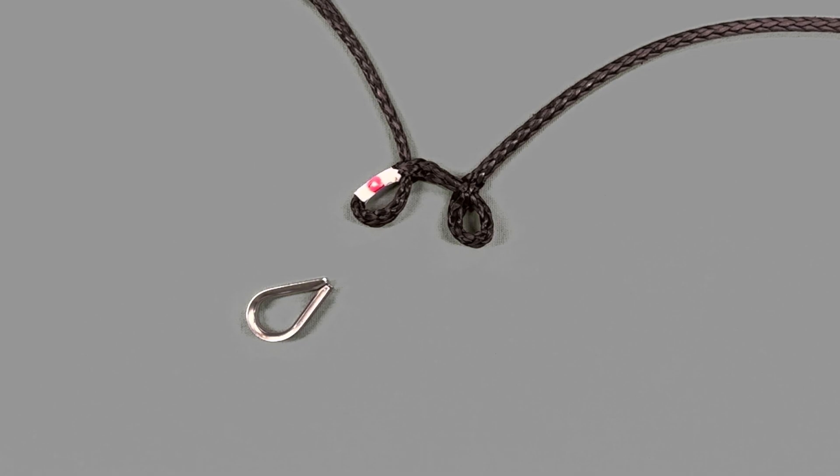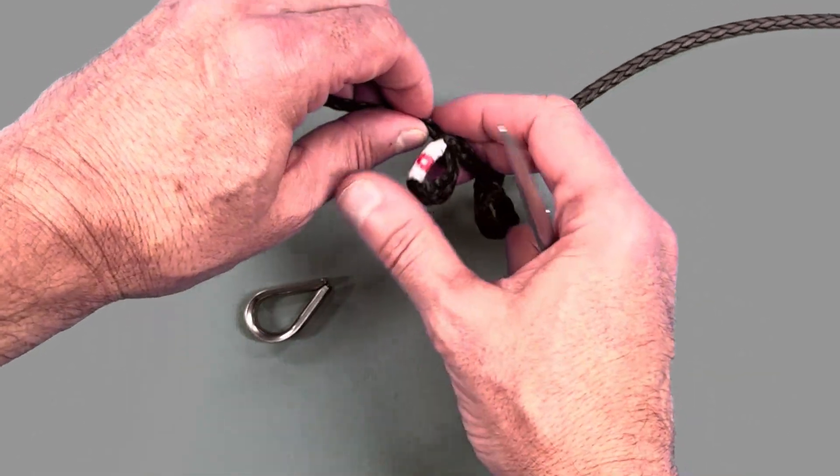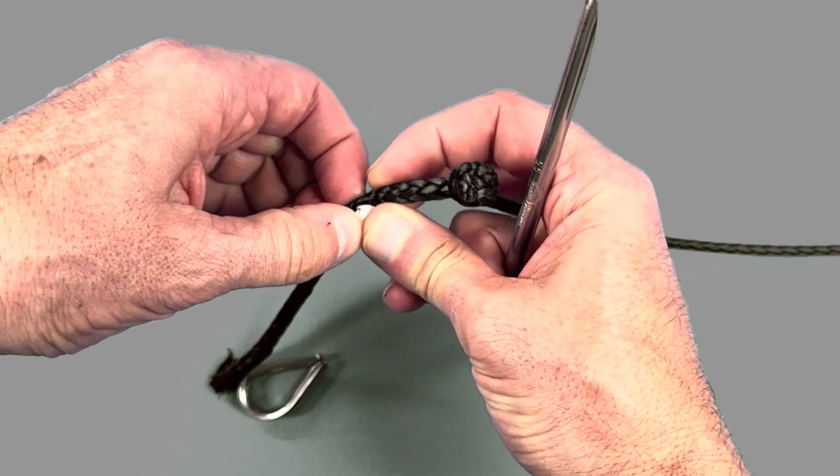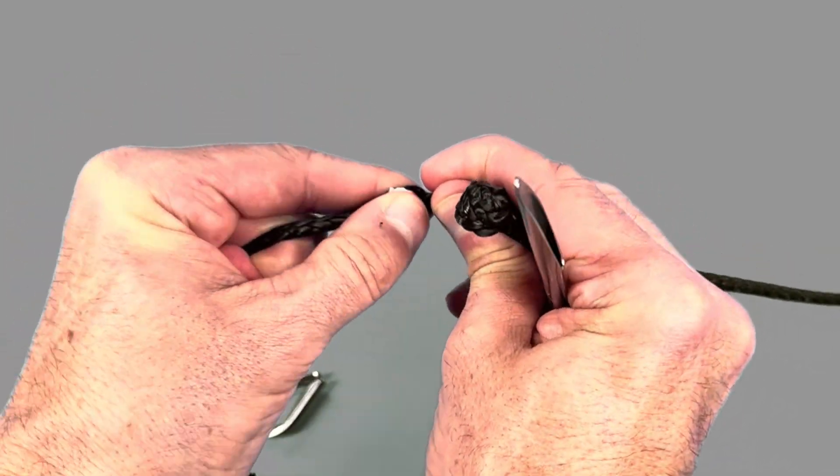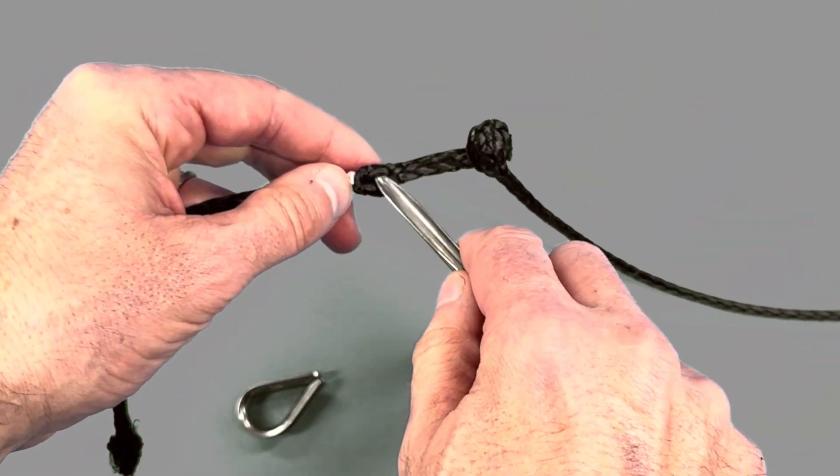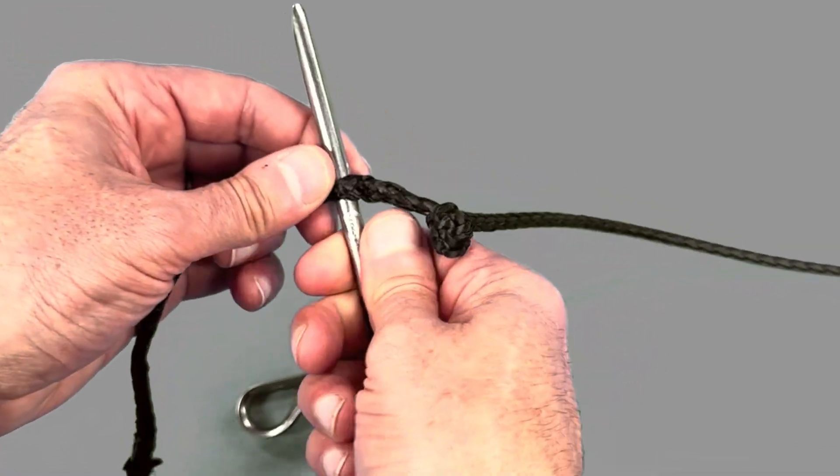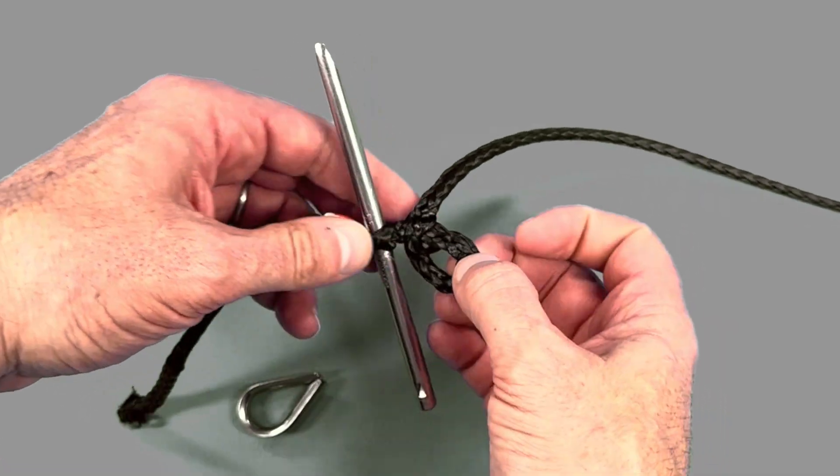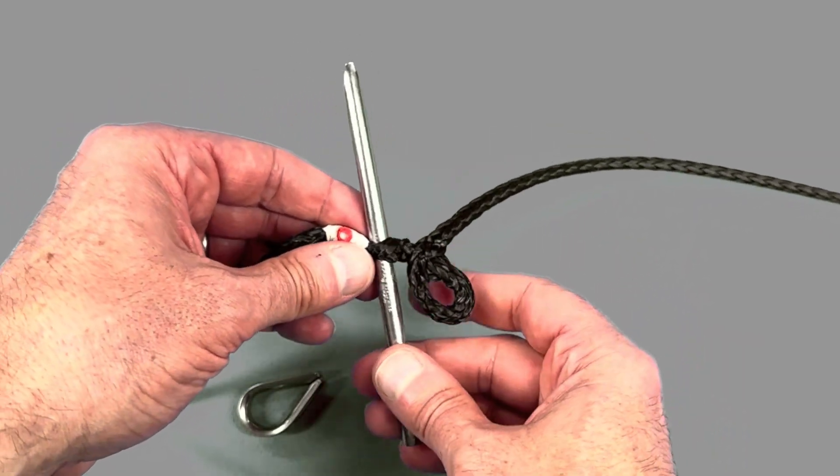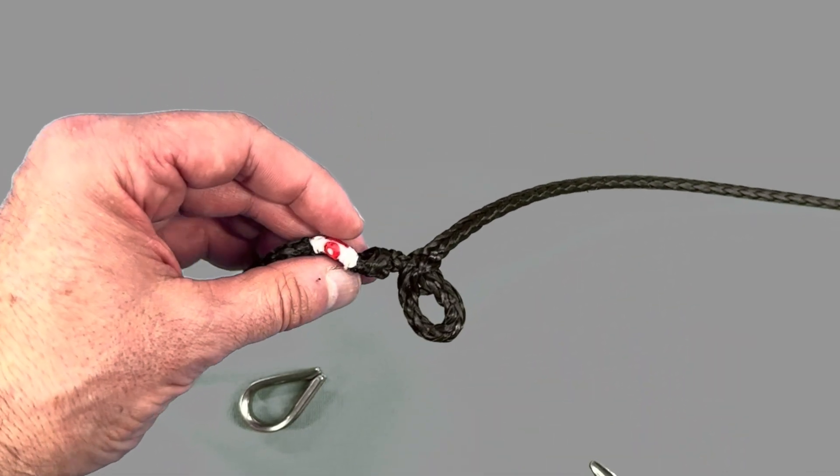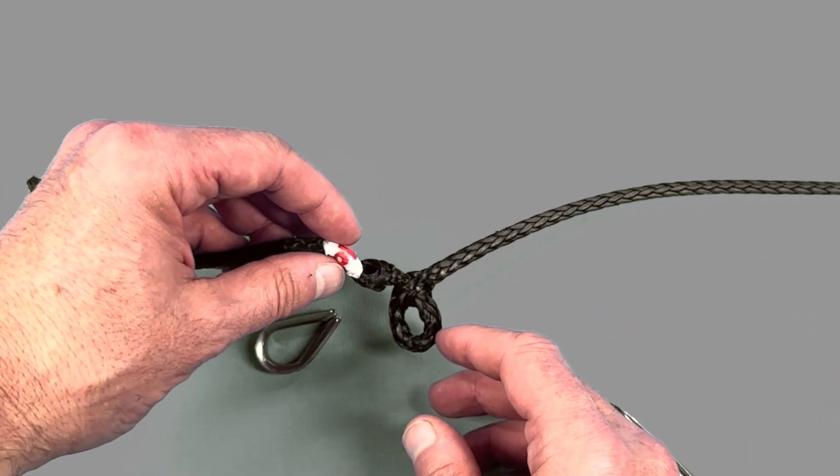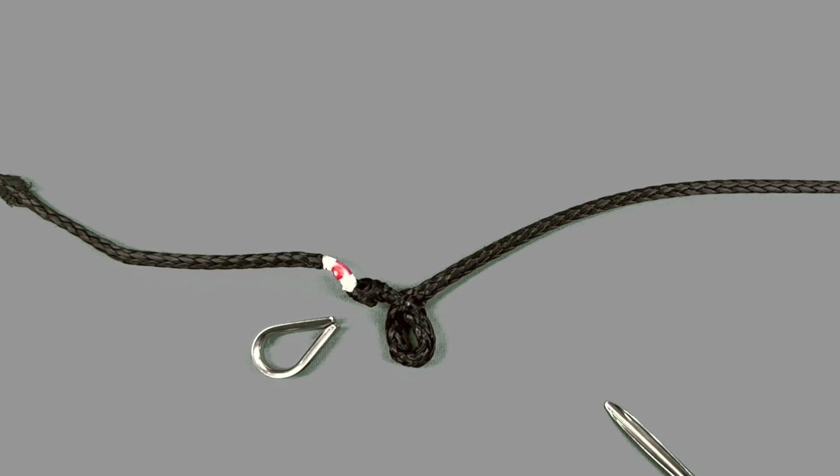Once you have these two mirror loops in place you're going to take the working end and pull it through, pulling the tape through the hole that you created and putting a twist into the rope. You then want to take your fid and widen out the hole, the second hole that you put in place. You're going to put the first loop in through that hole so it's going to need to be a little bit wider to achieve this.